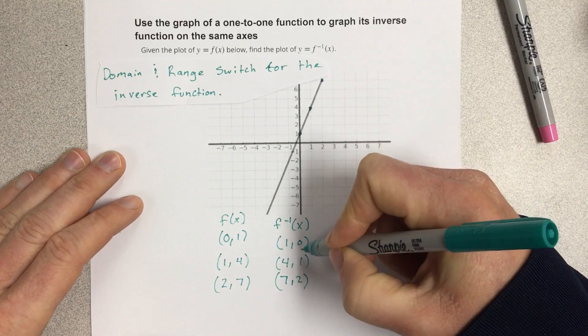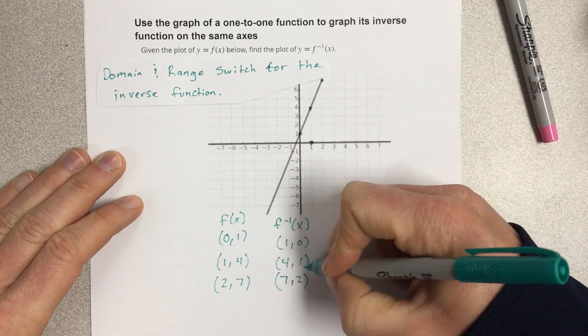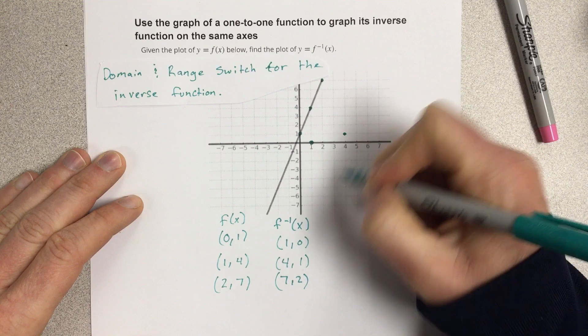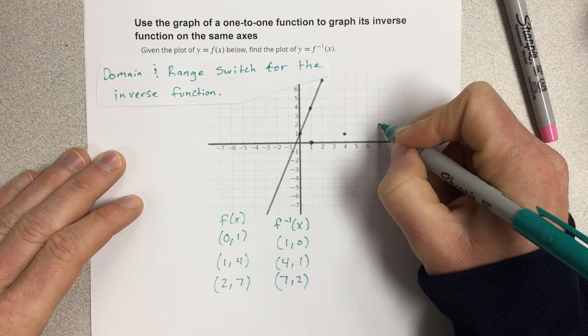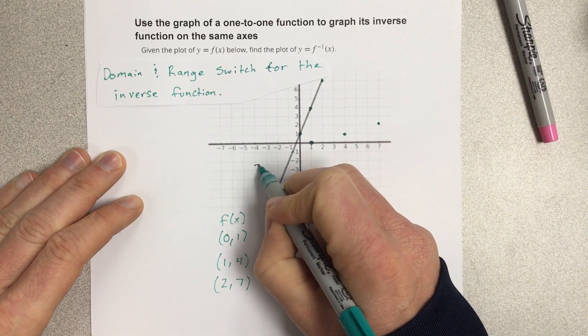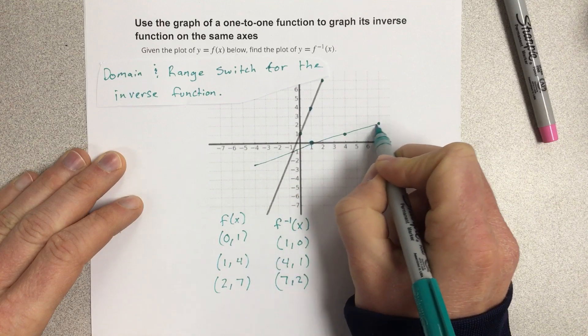So I can graph these now. 1, 0 would be here. 4, 1 would be here. And 7, 2 would be right there. So I can draw this inverse graph right there.